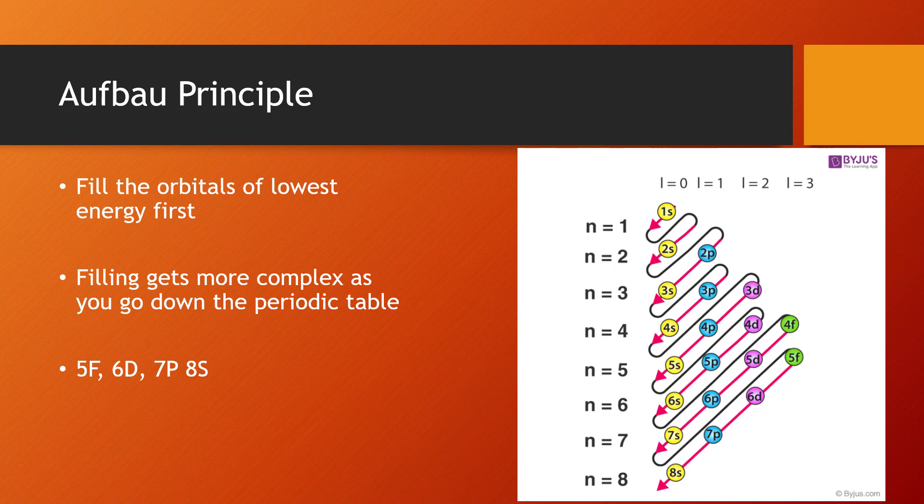Then 3p. Everything's moving along fine. And then 4s before 3d. That's where things get a little more complex, and that's when you're going to be dealing with the metals. So remember for the metals, you're going to be filling d orbitals before you're filling the next orbitals. So those are going to matter.